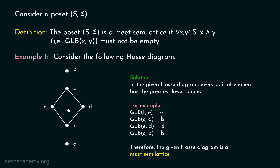You might ask: I have to consider every pair of elements — is it not going to be a tedious task? Obviously it is. That is why I advise you to find the greatest lower bound of the unrelated elements. You can see that elements which are related, let's say f and c, the greatest lower bound always exists — greatest lower bound of f and c is c only. Similarly for f and b, it is b only. It is always advisable to find the greatest lower bound of the unrelated elements. Here, c and d are unrelated or incomparable. If it is the case that the greatest lower bound does not exist, then the given Hasse diagram is not a Meet Semilattice.